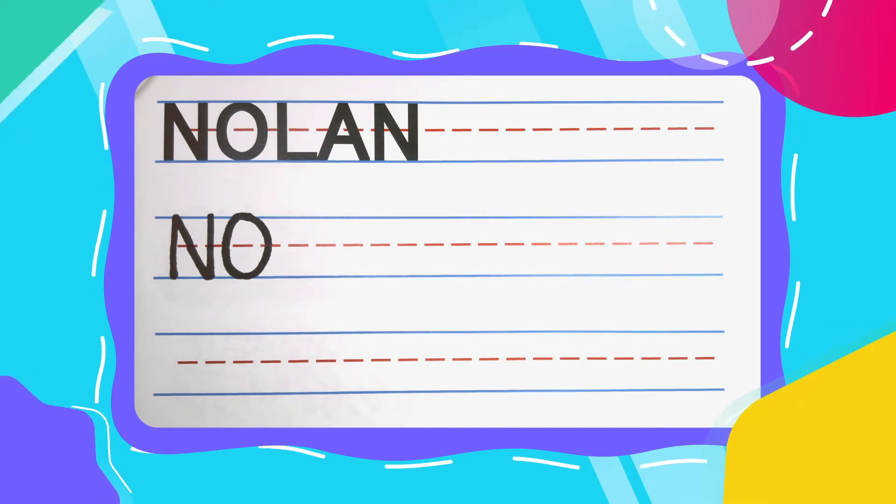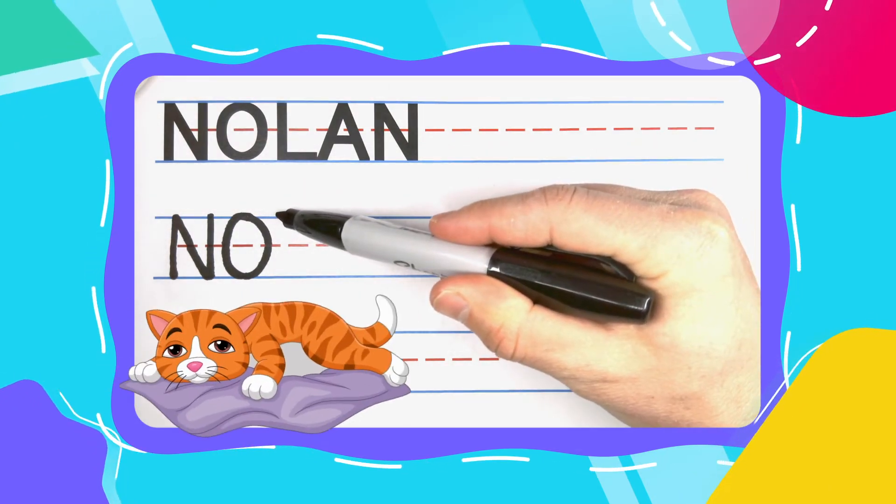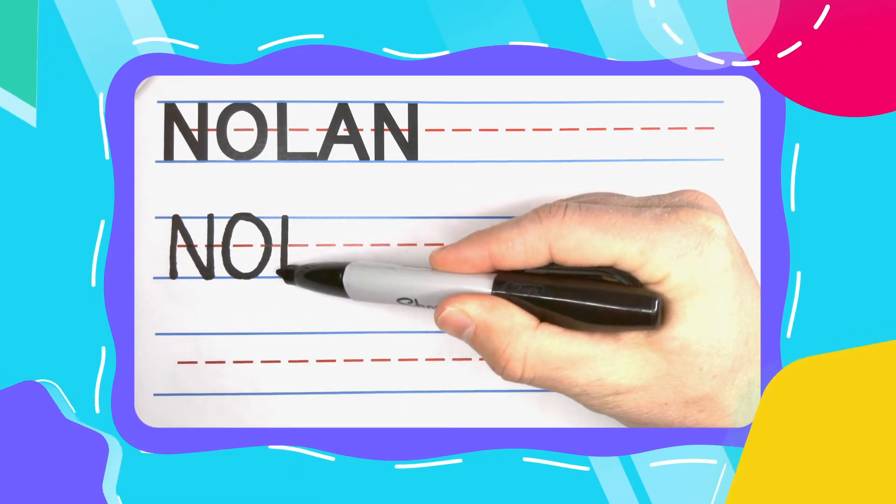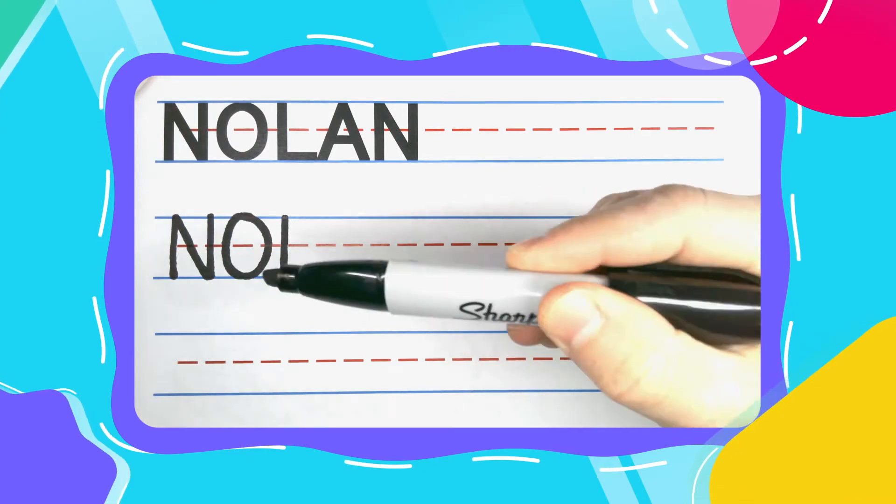The next letter in Nolan is the lazy L. Lazy L's start at the top, come down to the bottom, and then kick that lazy leg out to the right.